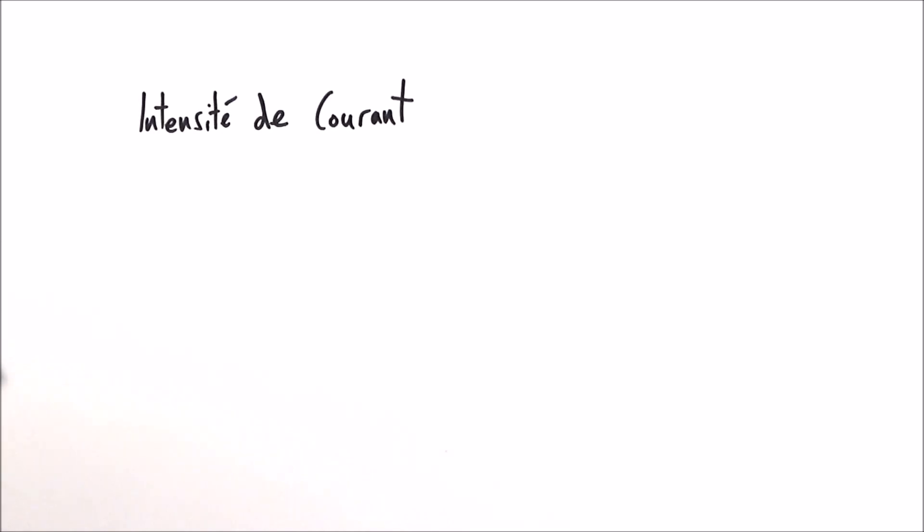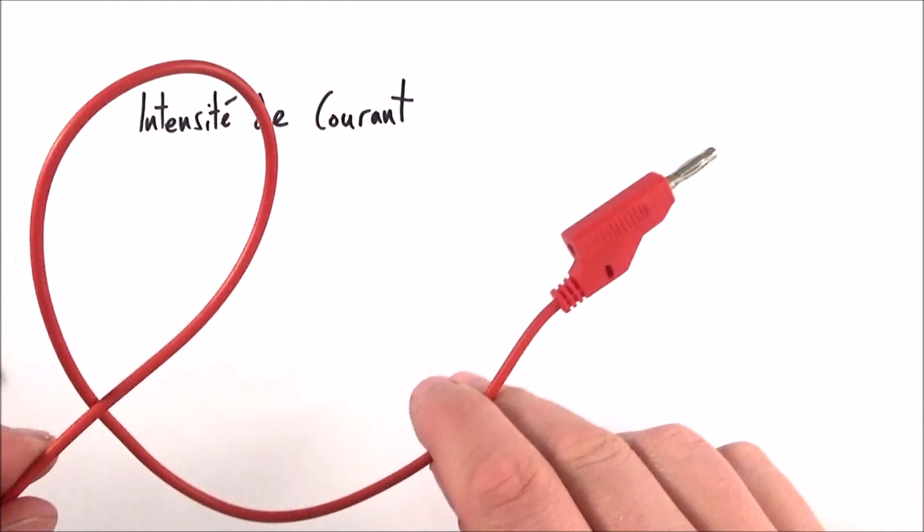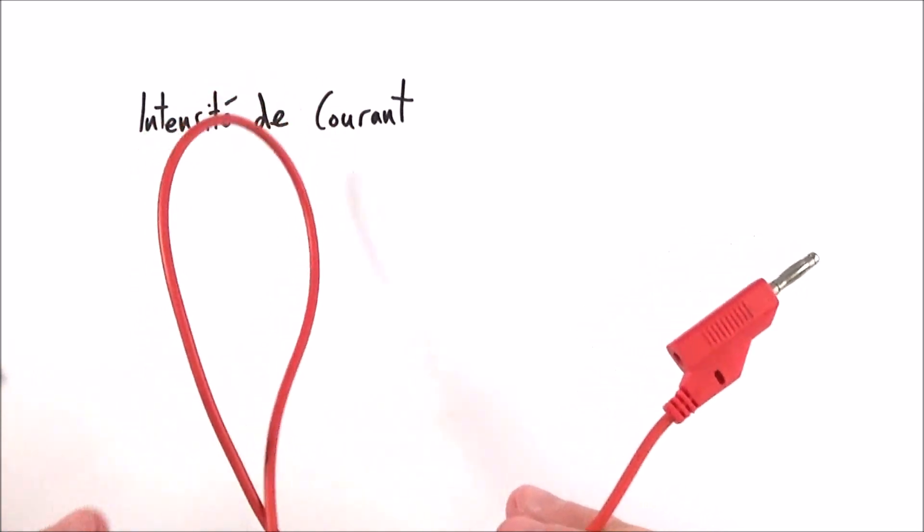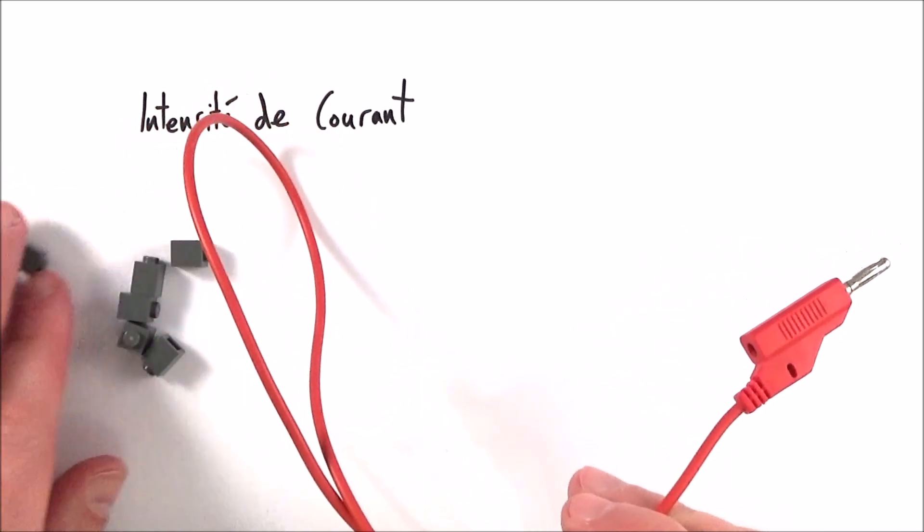So electric current, what is it? Well, if we consider perhaps a piece of wire, then it might be the flow of the electrons within that wire.